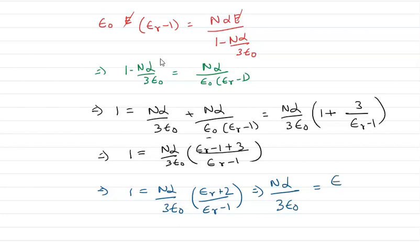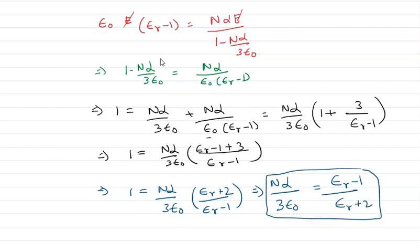Rearranging, N alpha by 3 epsilon-0 equals epsilon-r minus 1 divided by epsilon-r plus 2. This is the Clausius-Mossotti relation — the relationship between the dielectric constant epsilon-r and the polarizability alpha.